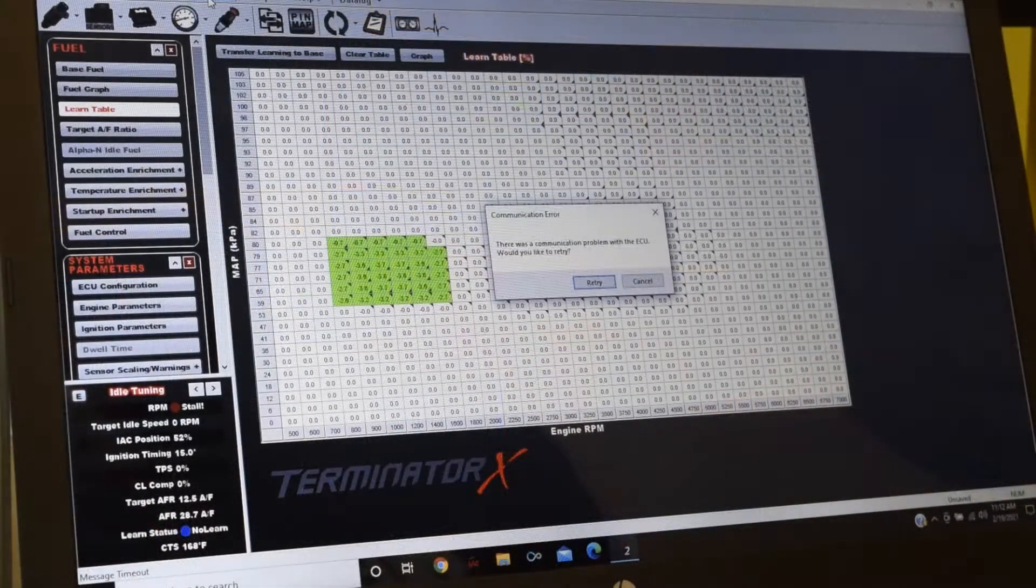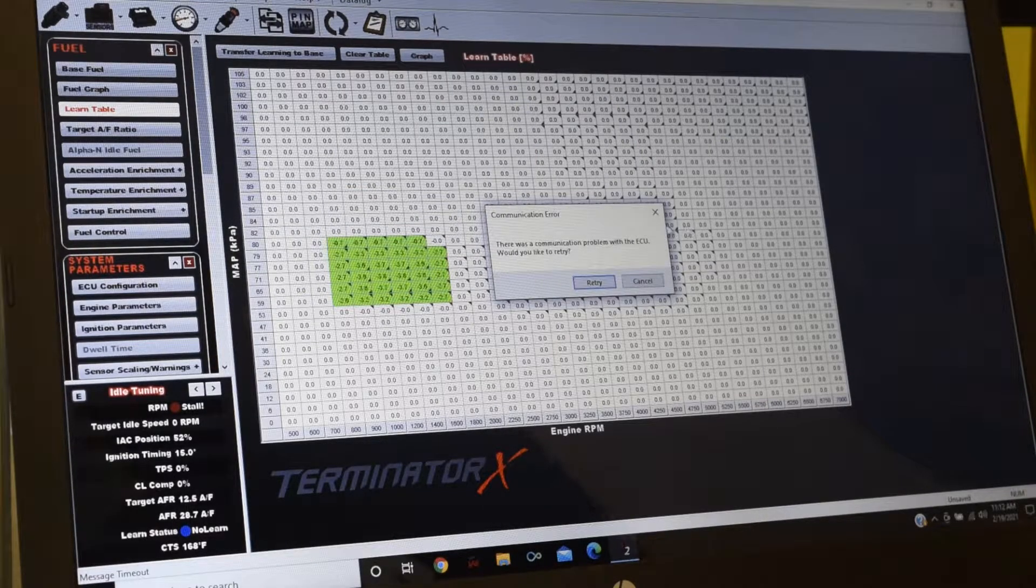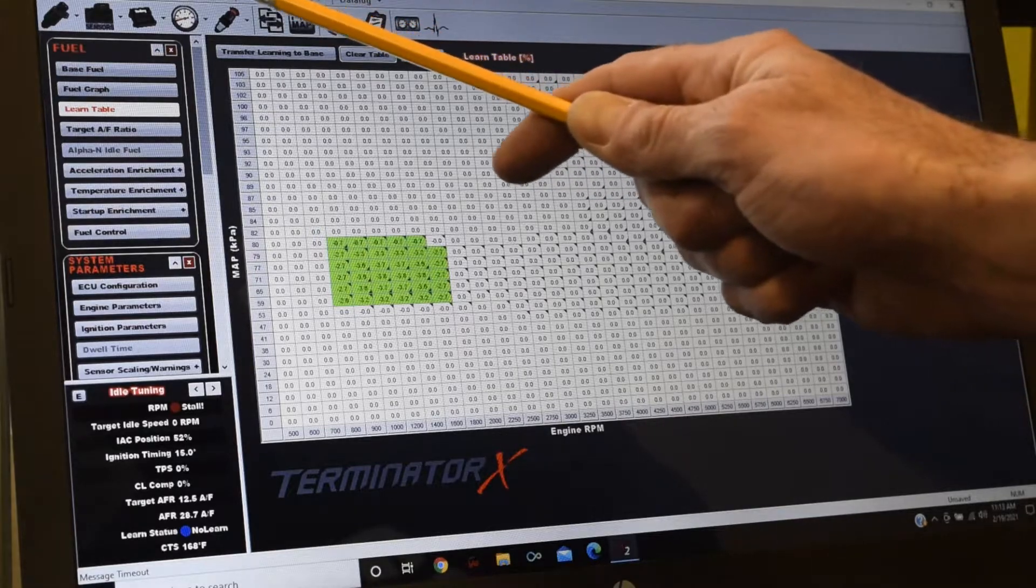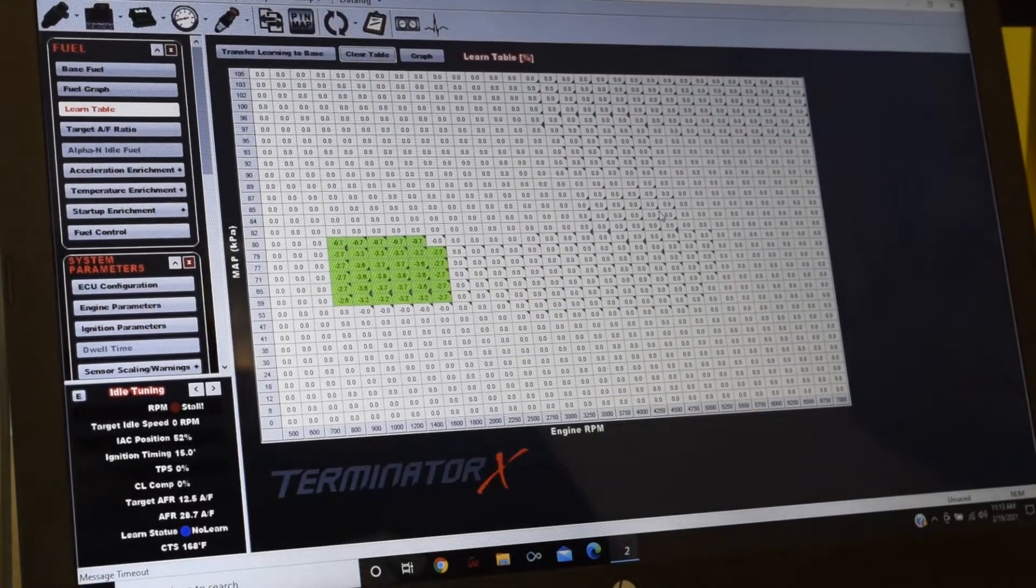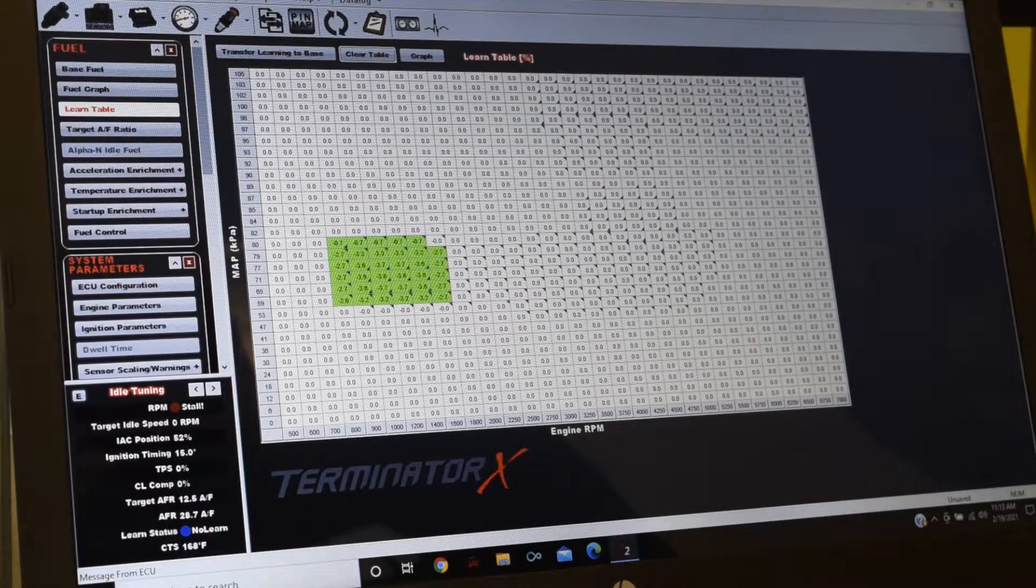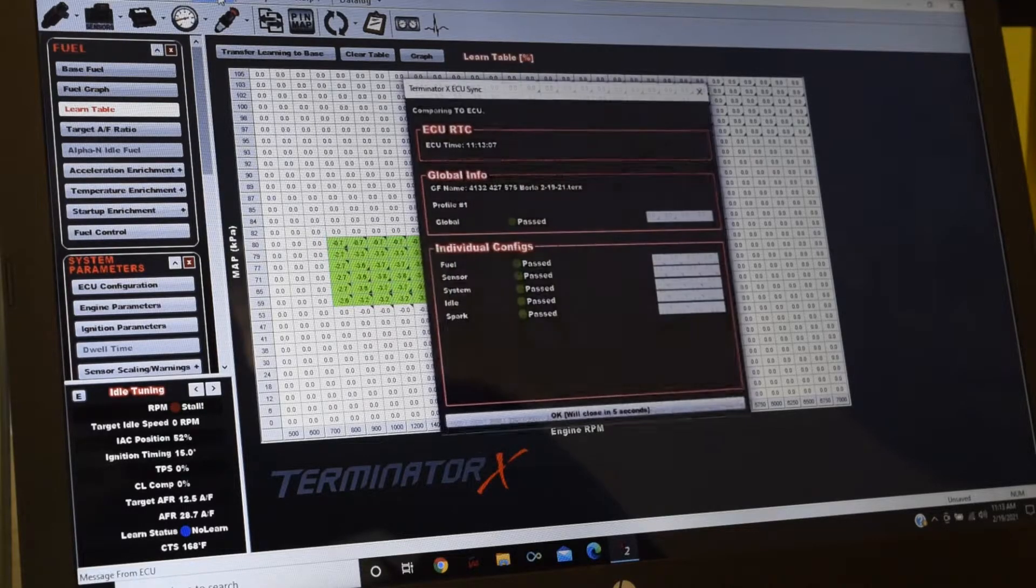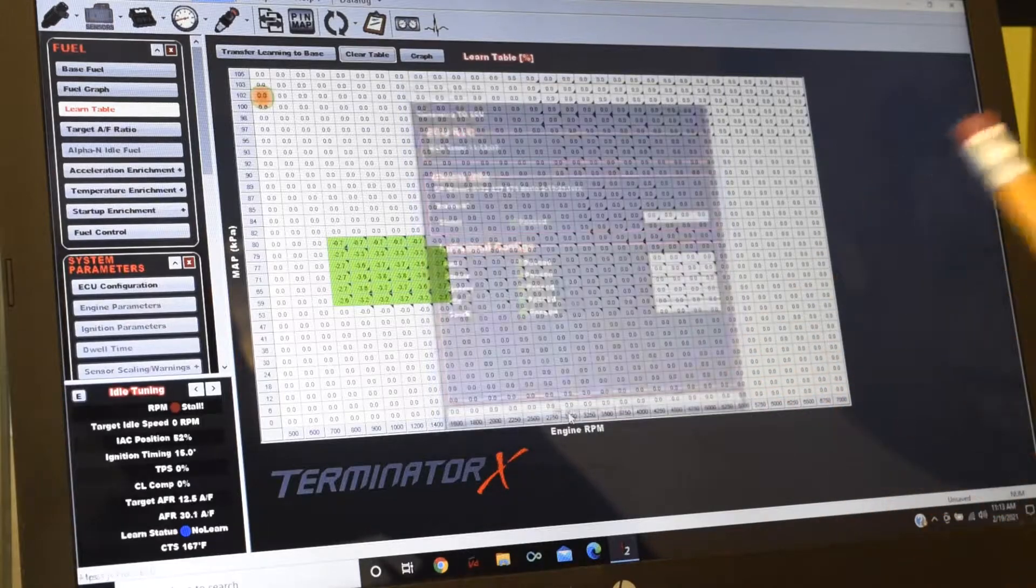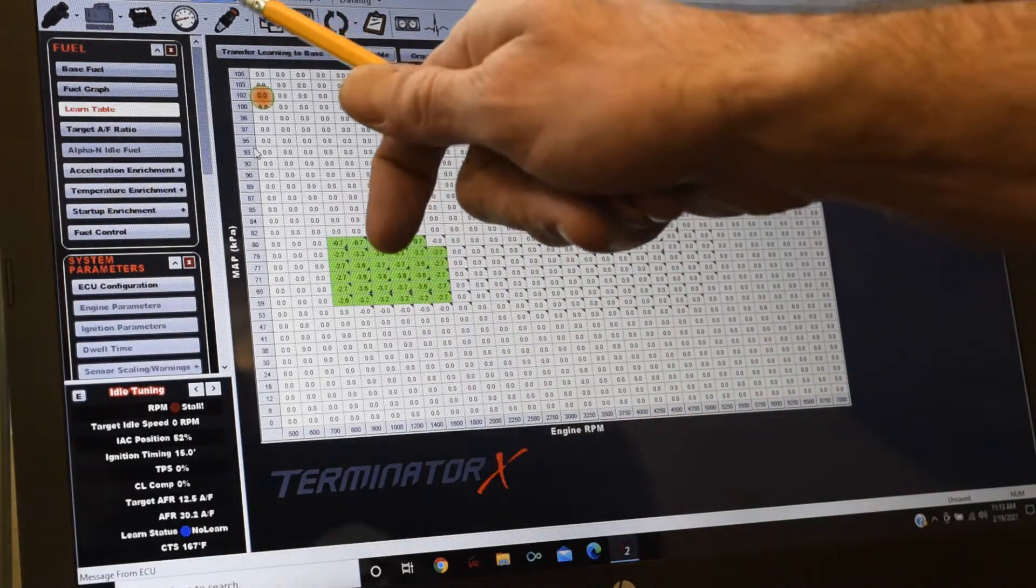The first thing that we would do is basically turn on our ignition switch. At the top of the screen here there's something called USB link. We're going to click that and this box here we can just check. Now you'll notice it says online - that means we're connected with the ECU in real time.